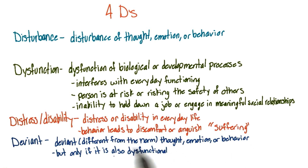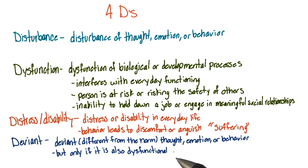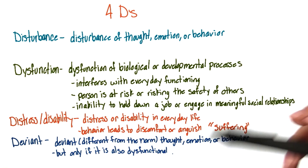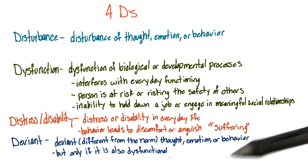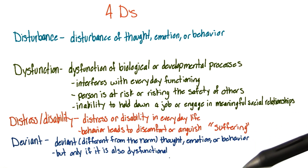Deviant literally means different from the norm, or different from what most people do. The DSM-5 does stress that deviant behavior can be classified as a disorder only if it's also dysfunctional. Einstein, for example, was deviant in many ways, but he wasn't dysfunctional.